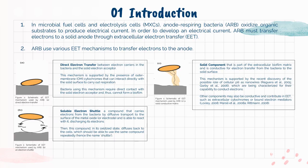Diving into Part 1, which is the Introduction. In Microbial Fuel Cells and Electrolysis Cells, Anode-Respiring Bacteria oxidize organic substrates to produce electrical current. In order to develop an electrical current, ARB must transfer electrons to a solid anode through extracellular electron transfer. ARB use various EET mechanisms to transfer electrons to the anode. The first mechanism is Direct Electron Transfer — direct electron transfer between electron carriers in the bacteria and the solid electron acceptor. This mechanism is supported by the presence of outer membrane cytochromes that can interact directly with the solid surface to carry out respiration. Bacteria using this mechanism require direct contact with the solid electron acceptor and, thus, cannot form a biofilm.